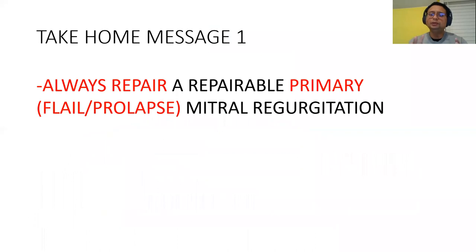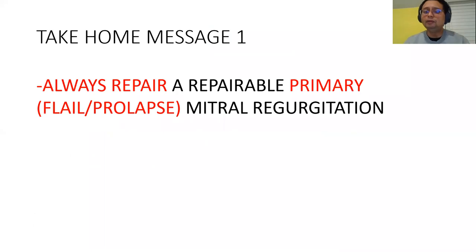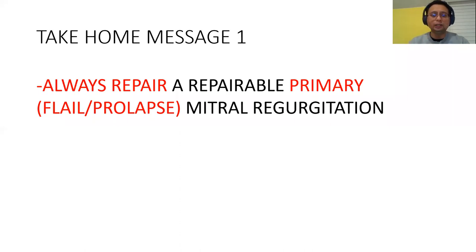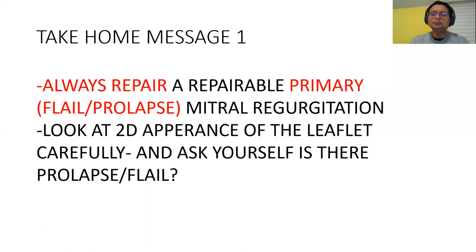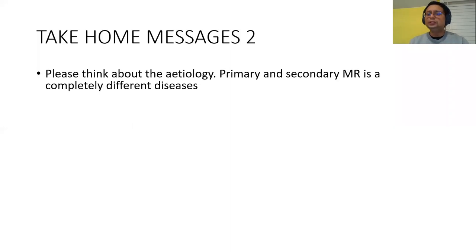Let me give the take-home messages first. Number one: if you see primary MR due to prolapse or flail, always repair if you can. If you replace a repairable mitral valve, you are making a great disservice to the patient — mitral valve replacement gives a 10 to 20 year survival penalty. Repair means you don't replace the leaflet; you perform some maneuver to correct the regurgitation. Always look at the 2D appearance carefully for prolapse or flail, because identifying this immediately tells you the mechanism.